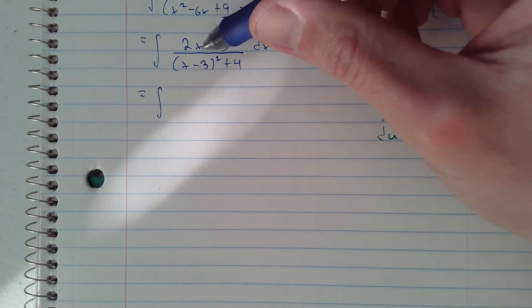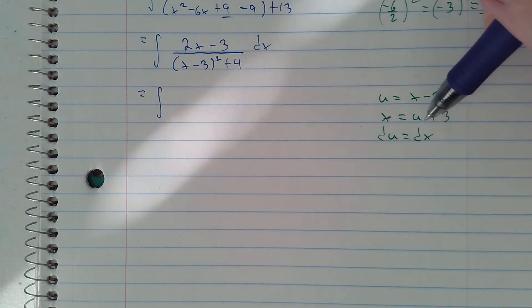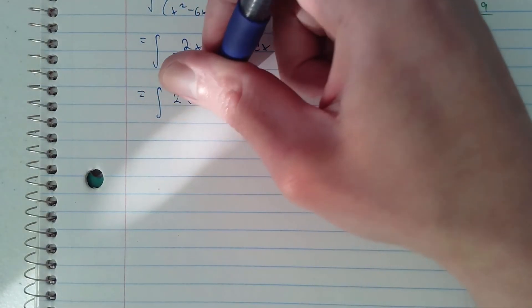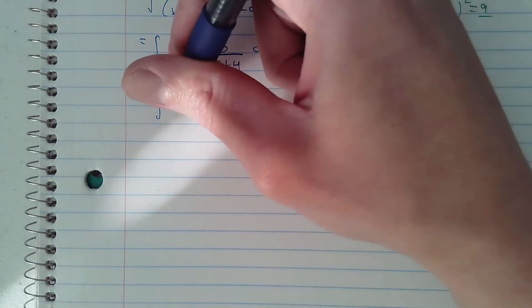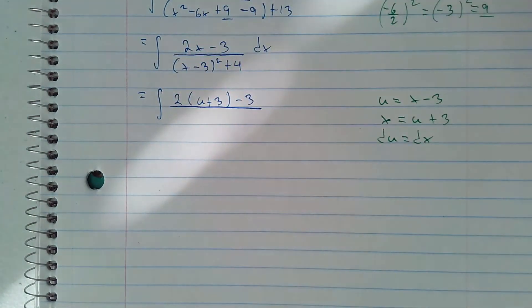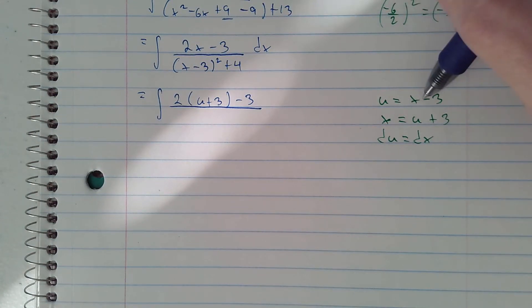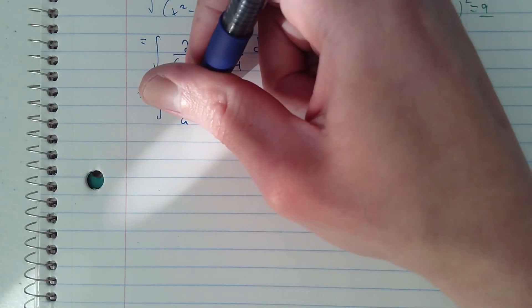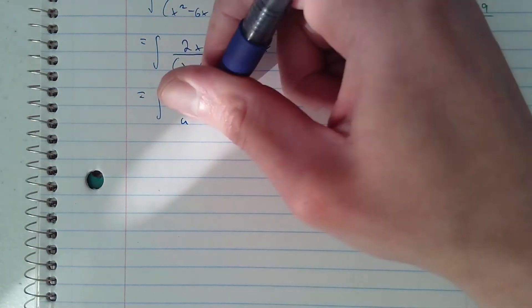Replacing this x right here with u plus 3, and then subtract 3. u is x minus 3, so that's u squared and then plus 4.